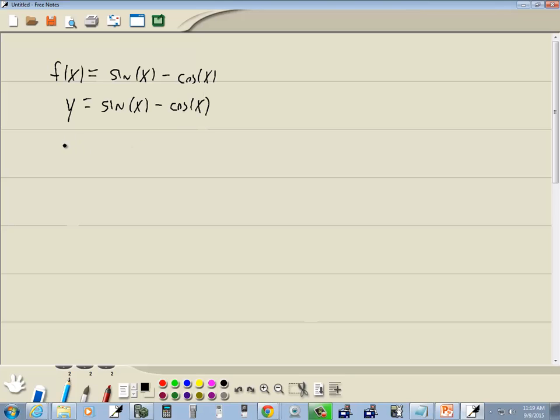Now to check if it's even or not, we're going to plug negative x in for x and see what happens. So we've got y = sin(x) - cos(x).